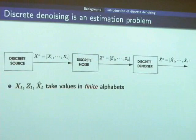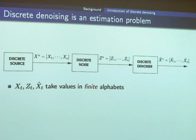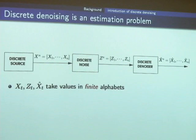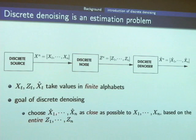The discrete denoising problem is essentially an estimation problem. You have a discrete source, which I denote as x₁ through xₙ, and it gets corrupted by discrete noise, resulting in the noisy sequence z₁ through zₙ. A discrete denoiser observes this noisy sequence and tries to estimate or reconstruct the source as x̂₁ through x̂ₙ. By discrete, I mean the values that x, z, and x̂ take in a finite alphabet — for example, English text in 26 alphabets, or binary signal with two alphabets. The goal is to choose x̂₁ through x̂ₙ as close as possible to the source, based on the entire noisy sequence z₁ through zₙ.